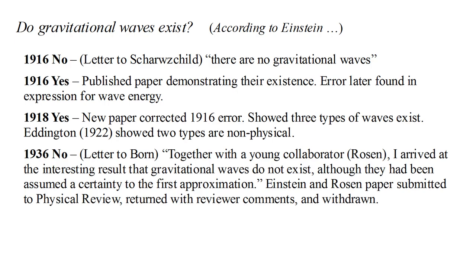By 1936 Einstein had changed his mind again. In a letter to Max Born he wrote, together with a young collaborator, Nathan Rosen, I arrived at the interesting result that gravitational waves do not exist, although they had been assumed a certainty to the first approximation.